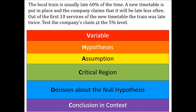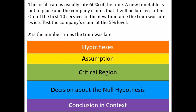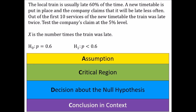Second example: the local train is usually late 60% of the time. A new timetable is put in place and the company claims it will be late less often. Out of the first 10 services, the train was late twice. Test the company's claim at the 5% level. The variable is the number of times the train was late. The null hypothesis is p equals 0.6; the alternative is p less than 0.6, since we're testing whether it's late less often.